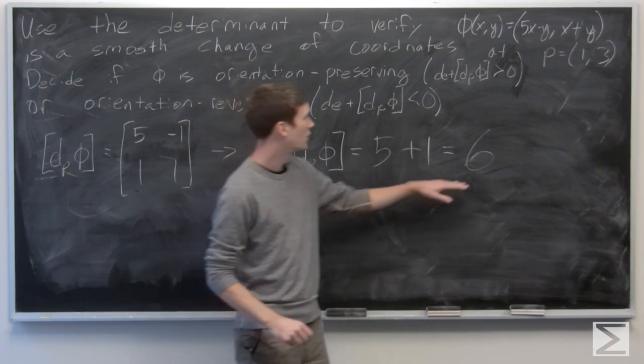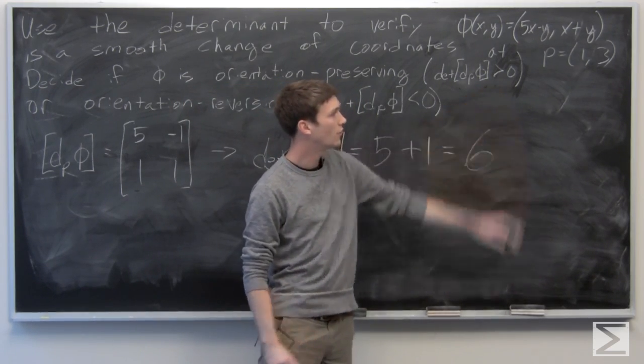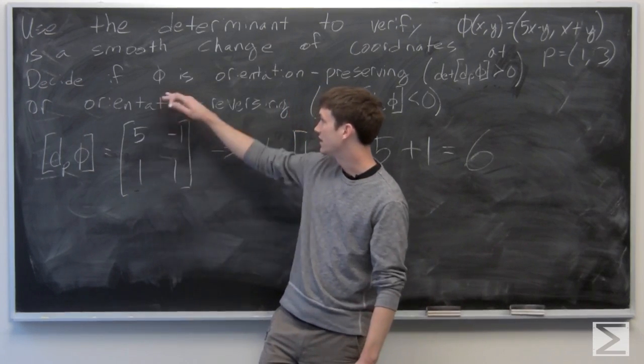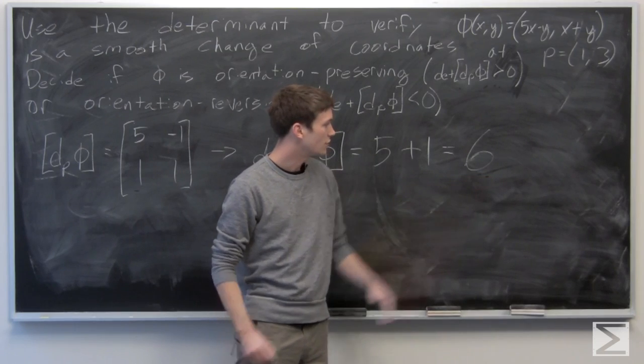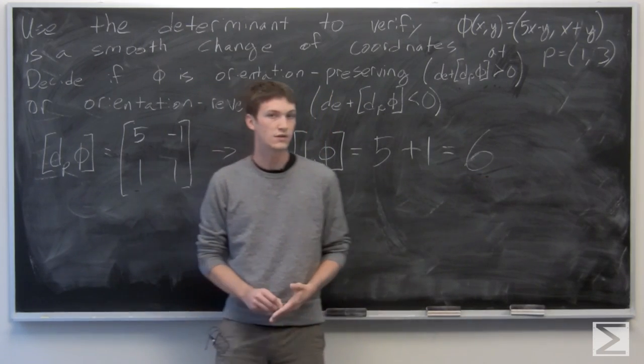And since our determinant is more than 0, we know that phi is orientation preserving. So this determinant of our matrix tells us all that information.